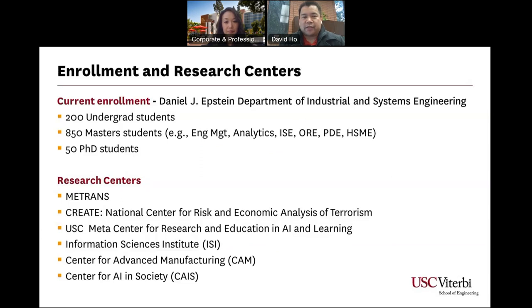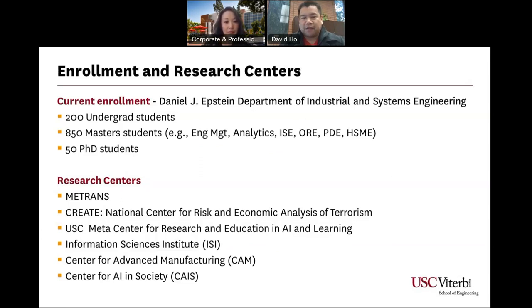Our current enrollment numbers: approximately 200 undergraduate students, approximately 850 master's students spread across 6 primary programs and dual degree programs, and approximately 50 PhD students. Our research centers include METTRANS, CREATE National Center for Risk and Economic Analysis of Terrorism, USC META Center for Research and Education in AI and Learning, Information Sciences Institute in Marina Del Rey, Center for Advanced Manufacturing, and Center for AI and Society.